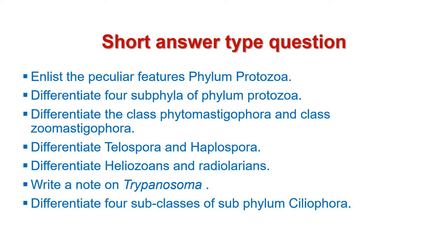Next: differentiate class Phytomastigophora and class Zoomastigophora. Next: differentiate Telospora and Haplospora. Next: differentiate Heliozoans and Radiolarians. Next: write a note on Trypanosoma. And the last question from this category: differentiate the four subclasses of subphyla of phylum Ciliophora.